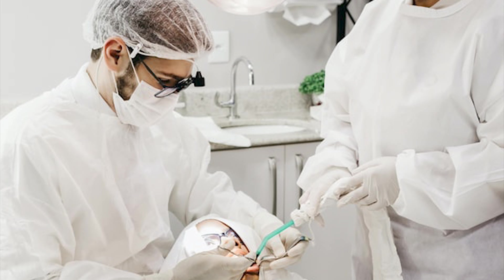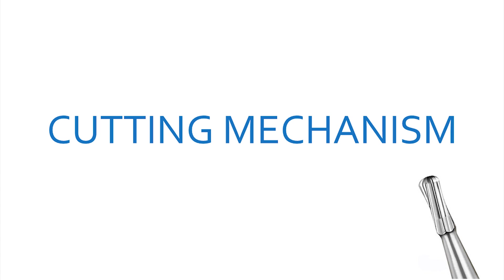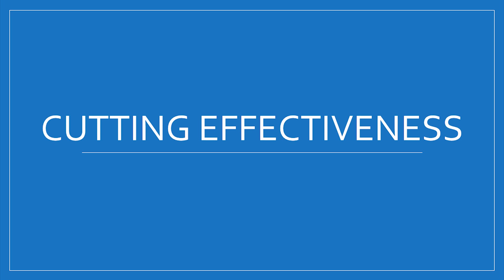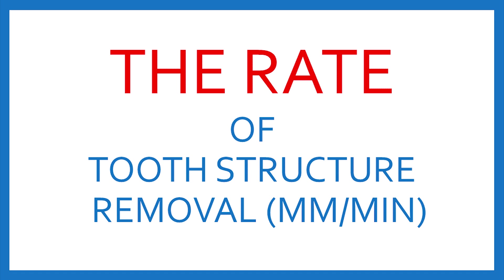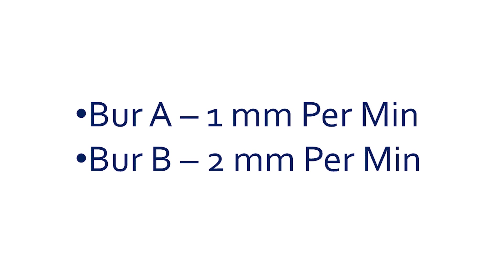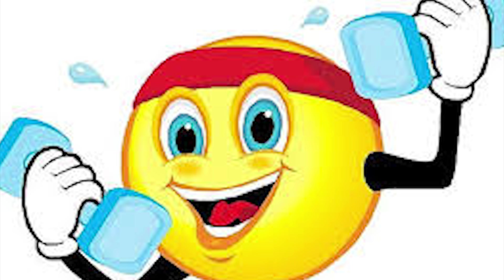There are two important terminologies when we try to understand the cutting mechanism. The first is cutting effectiveness and the second is cutting efficiency. Cutting effectiveness is the amount of tooth structure removed in a certain period of time. For example, if burr A removes one millimeter of tooth structure in one minute and burr B removes two millimeters in one minute, then burr B is considered more effective than burr A.